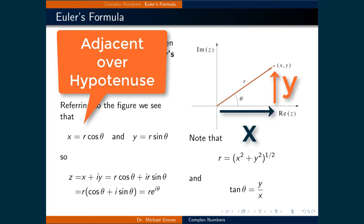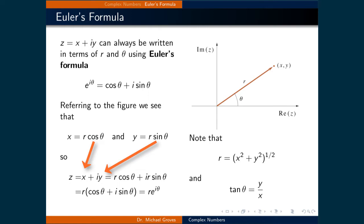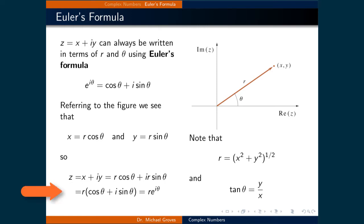Referring to the figure, we can see that x is equal to r times the cosine of theta, and y is equal to r times the sine of theta. Substituting that into our Cartesian expression for a complex number, we get z is equal to r cosine theta plus i times r sine theta. If we distribute out the r, we can now relate this expression to the complex exponential e raised to the power of i times theta, as defined by Euler's formula. This means that r times the cosine of theta plus i sine theta is equal to r times e raised to the power of i times theta.